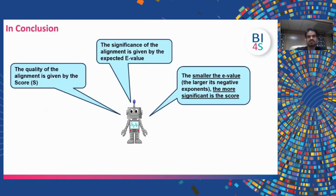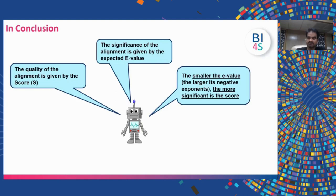In conclusion, the quality of the alignment is given by the score, so if you want to assess alignment quality, look at the score. The significance of the alignment is given by the E-value — how significant is the hit. Smaller the E-value, the better the result. When you get results, you should focus on both the score and the E-value.